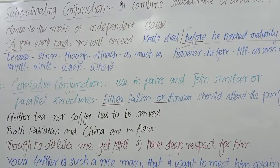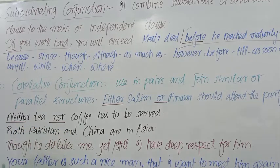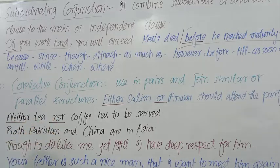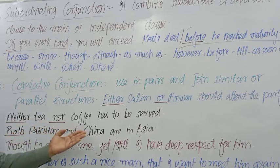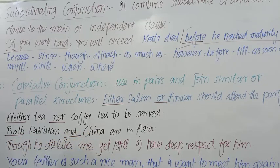اسی طرح: 'Neither tea nor coffee has to be served' — نہ تو چائے پیش کریں گے اور نہ کافی. So 'neither/nor' یہ correlative conjunction ہے. اسی طرح: 'Both Pakistan and China are in Asia' — پاکستان is in Asia اور China is in Asia، تو 'both Pakistan and China are in Asia.' So 'both/and' یہ correlative conjunction ہے.